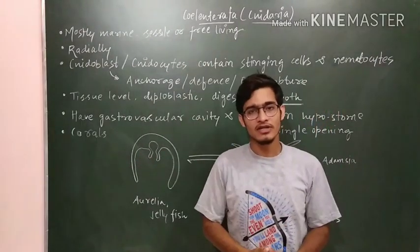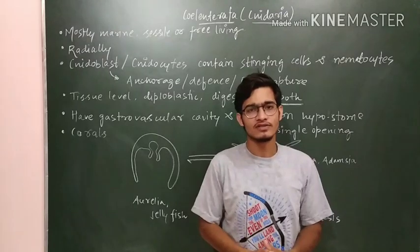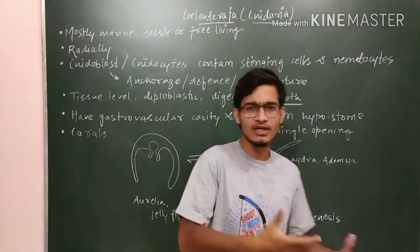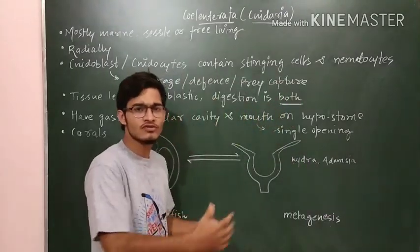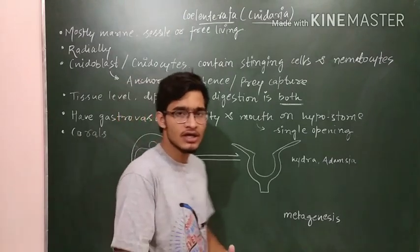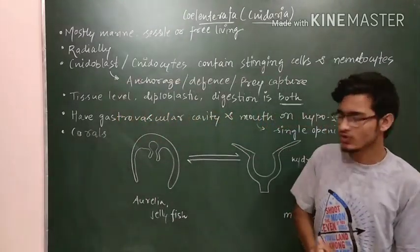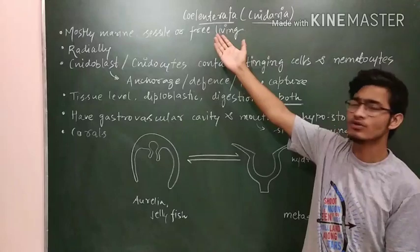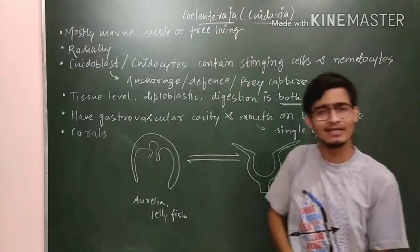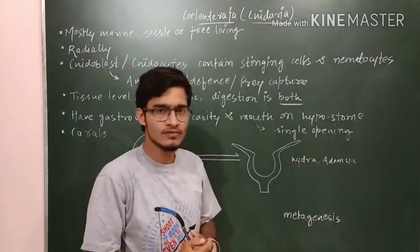Hello guys and welcome back to another video from Vipin Sharma Biological Tutorials. In this video we are going to proceed in our discussion of different phylums present in the animal kingdom. In the last video we talked about Porifera. In this video we are going to talk about the next phylum, Coelenterata, which is also known as Cnidaria.